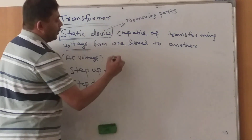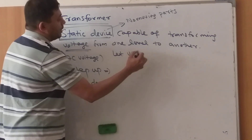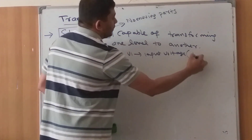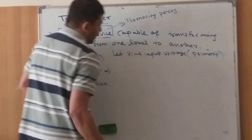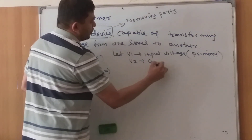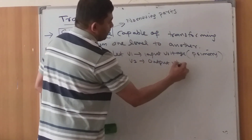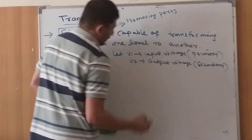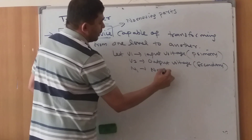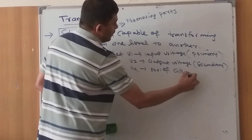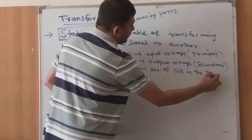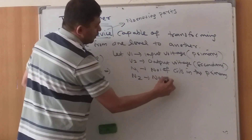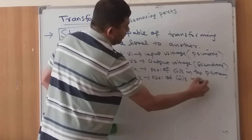Let V1 be the input voltage, also called the primary voltage, and V2 the output voltage — in other words, the secondary voltage. N1 is the number of coils in the primary and N2 is the number of coils in the secondary.